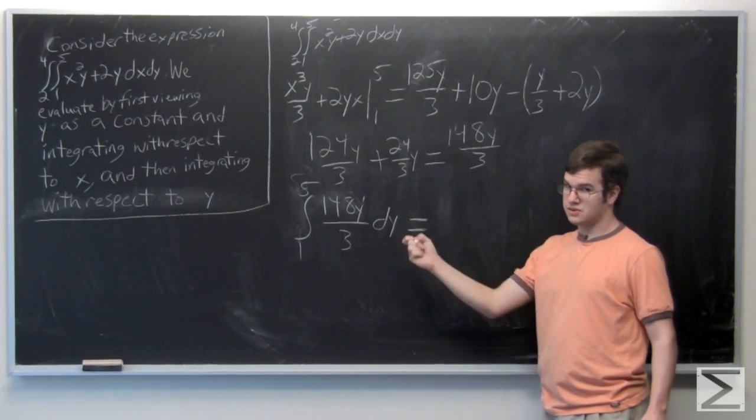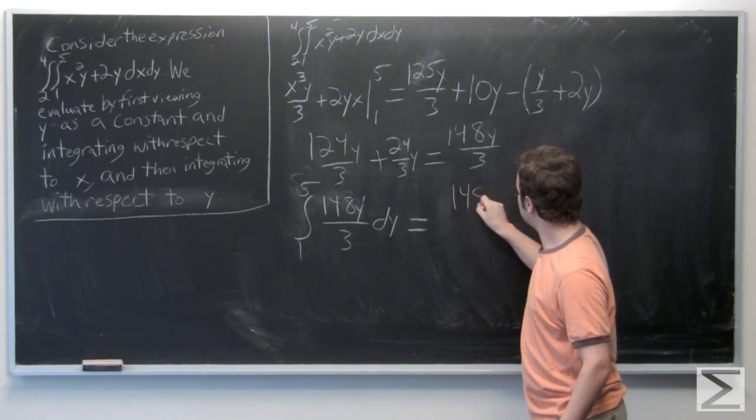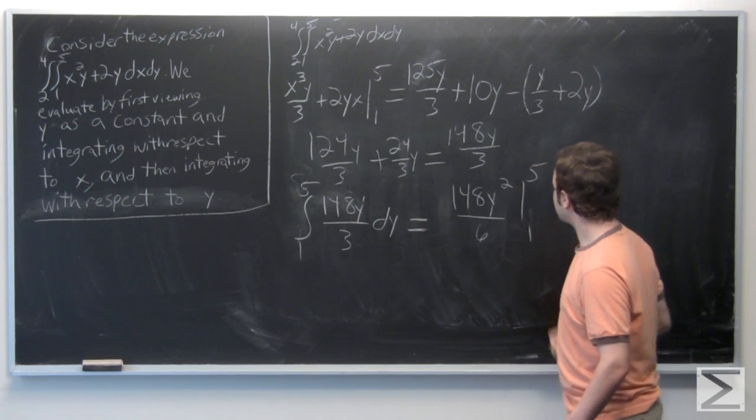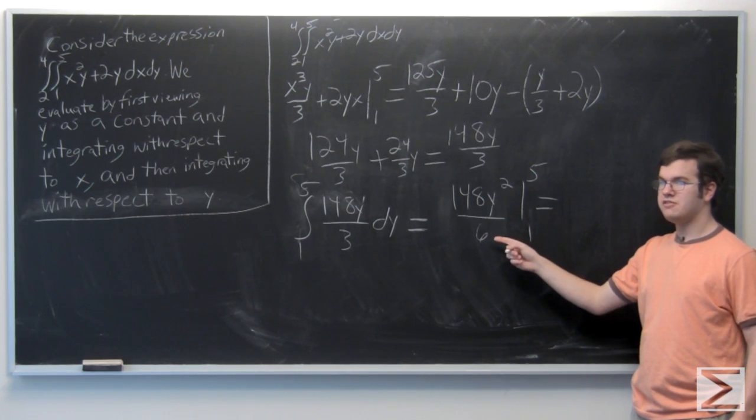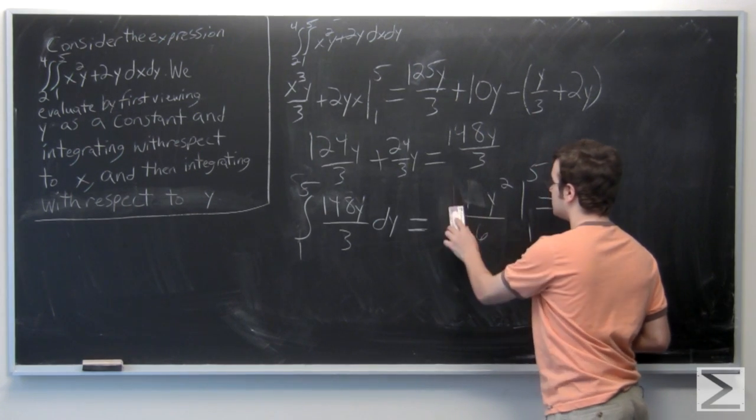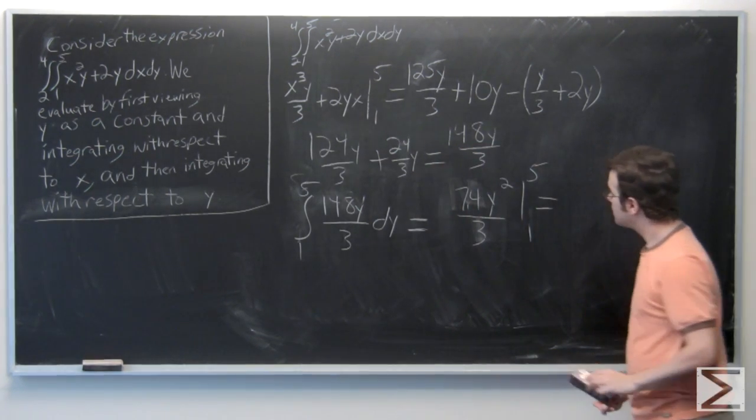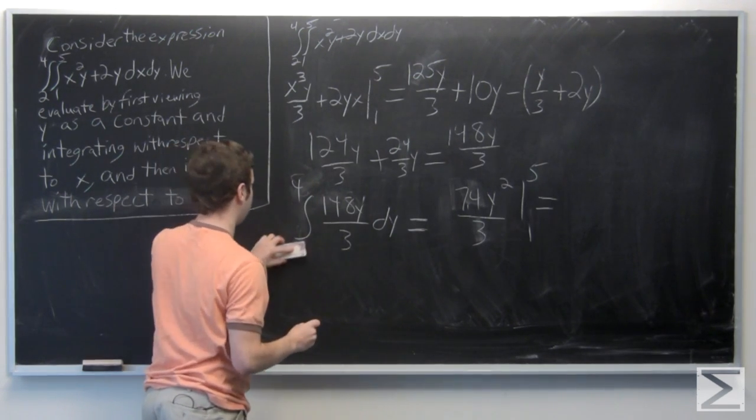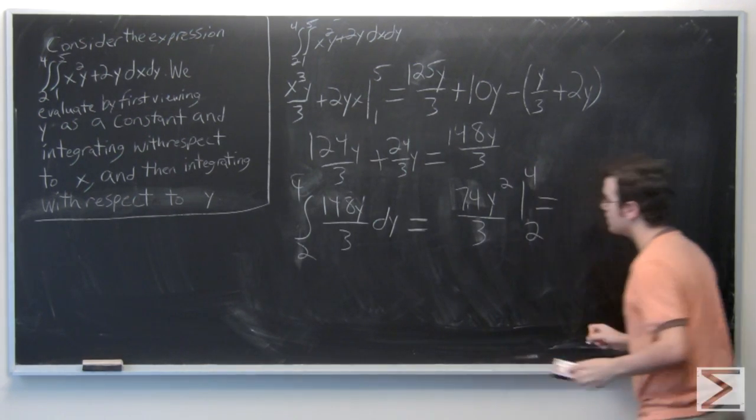And y is to the power of 1, so using the power rule, it will equate to y squared over 2, evaluated from 1 to 5. Okay, so 148 and 6 both have the number 2 as a common factor, and therefore we could reduce this fraction to make the problem much simpler. Okay, so I'm sorry, this integral should be from 2 to 4.